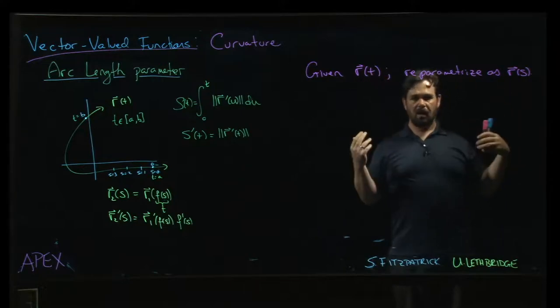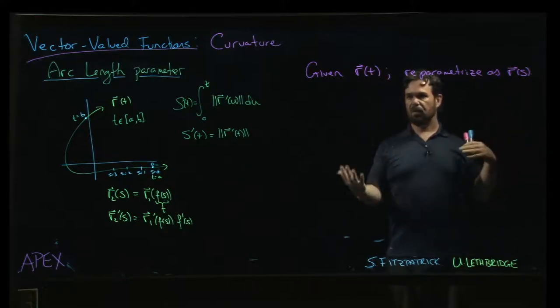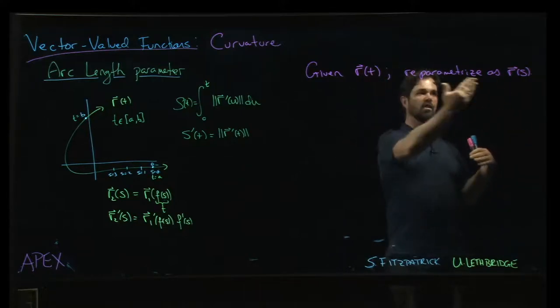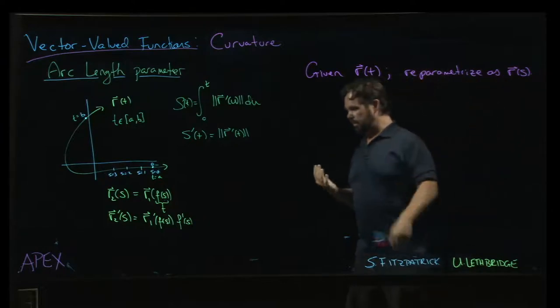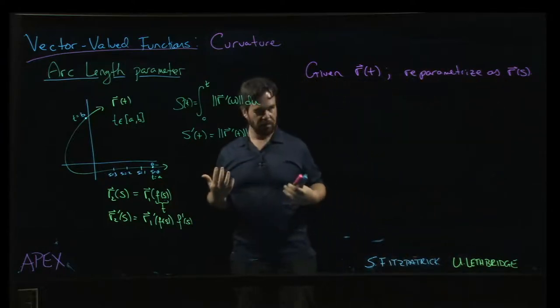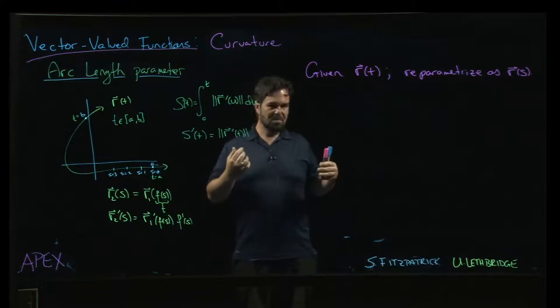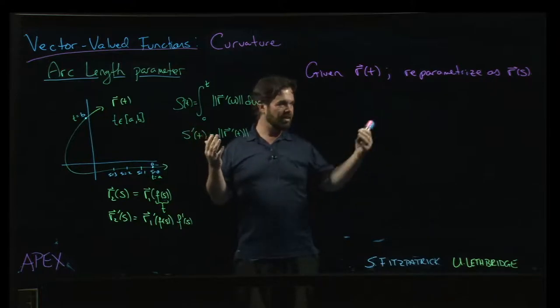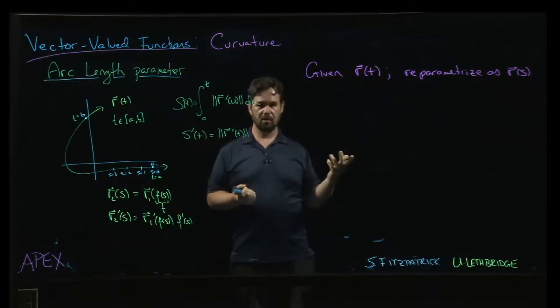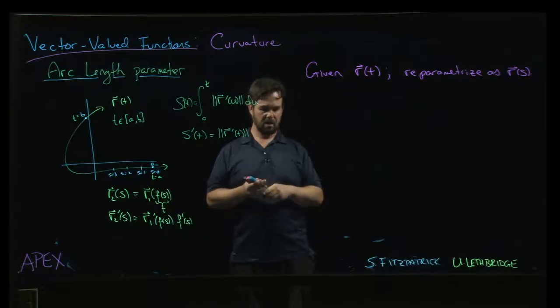But the book uses R for both the original vector-valued function and the reparametrized vector-valued function. So I'll stick with that notation. I guess it'll work for us. I feel like it's a little bit of an abusive notation, but it'll get the job done.